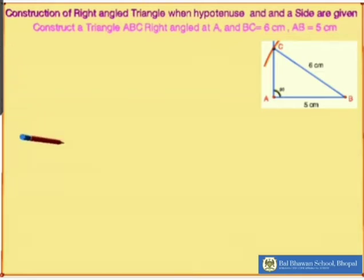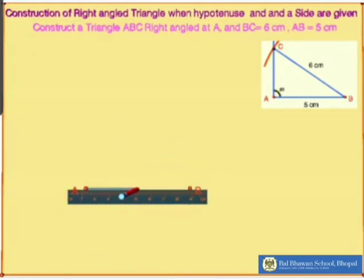So let us start. I have taken the pencil and we will start through a point, name it as A. Now I am going to take my ruler and draw a line segment of 5 cm such that AB is equal to 5 cm.